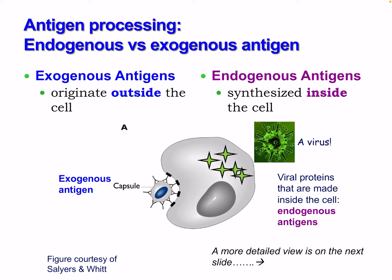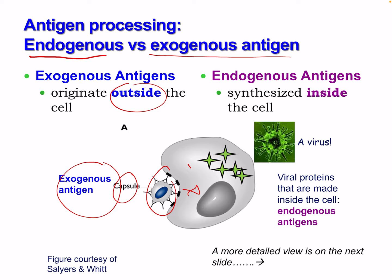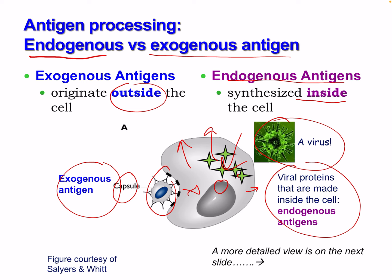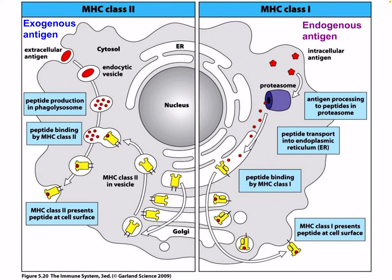From terminology: endogenous versus exogenous. An exogenous antigen originates outside the cell — here's an example of an exogenous antigen in a capsule binding to the cell, the cell takes it in, then presents it. An endogenous antigen is something synthesized in the cell — for example, a virus which replicates: the virus infects the cell, replicates, and then leaves, but our cell also processes pieces of the virus and presents them. These viral proteins made inside the cell are endogenous antigens.